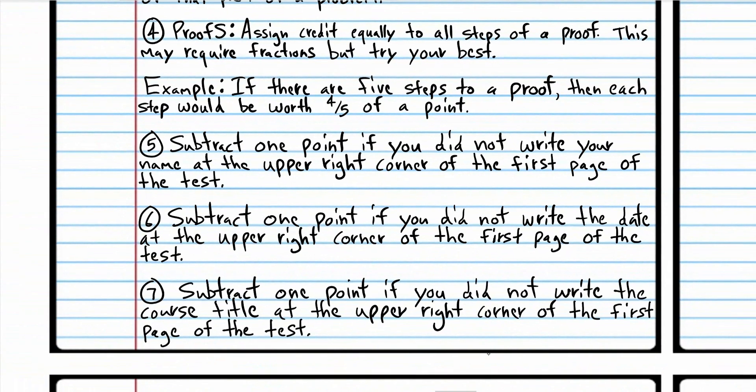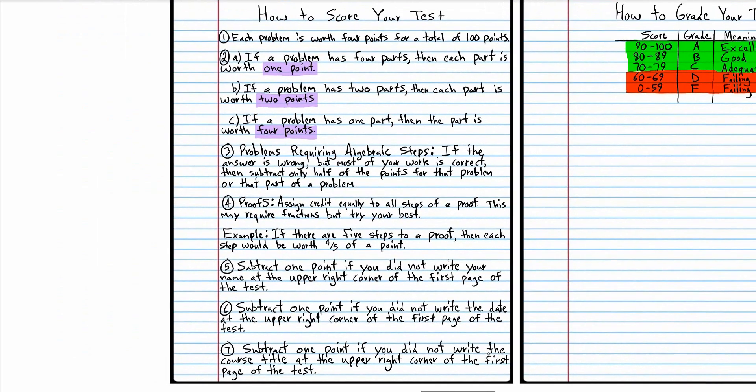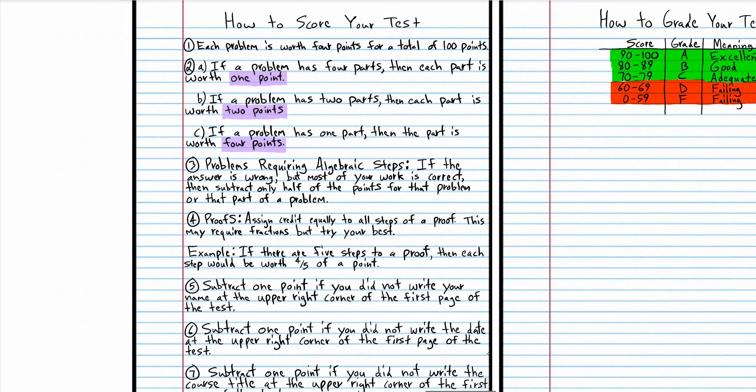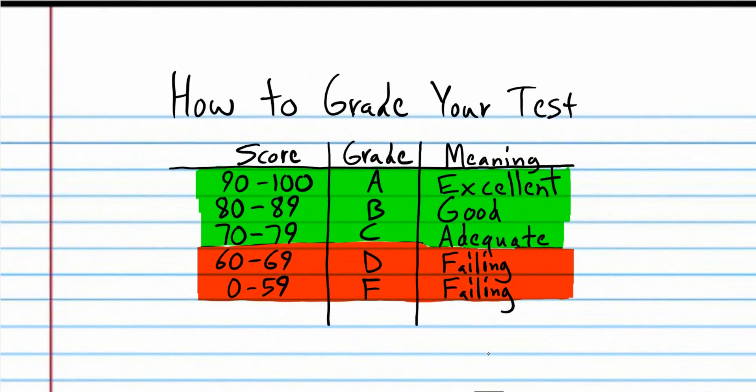And again, if you did not write your name, subtract one point. If you didn't write the date, subtract one point. If you didn't write the course title, subtract one point. And that's basically how to score your test. So, now, I want to go to the grading.